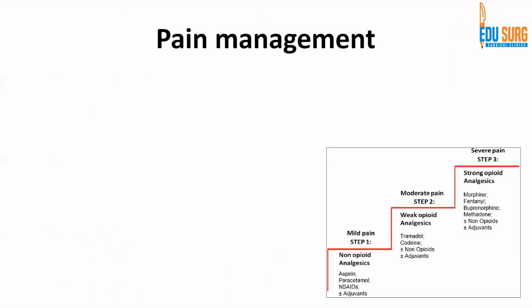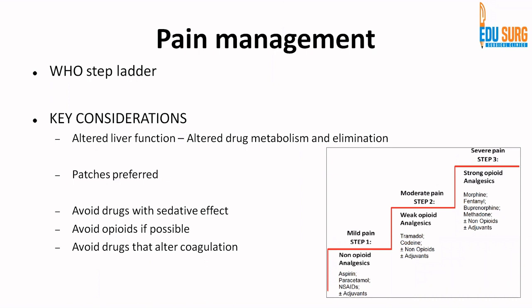For pain management, the WHO step ladder is well known. The key consideration in biliary cancer is that these patients have altered liver function, so the WHO step ladder needs modification of doses as well as modification of drugs. These patients have altered drug metabolism and slow drug elimination. We have to avoid drugs with sedative effect, avoid opioids as far as possible, and avoid drugs that can alter the coagulation pathway.